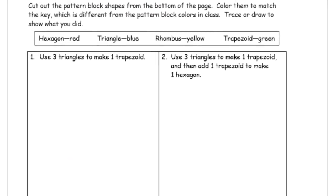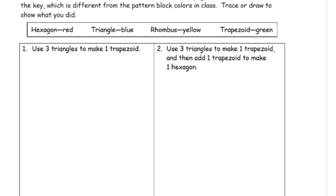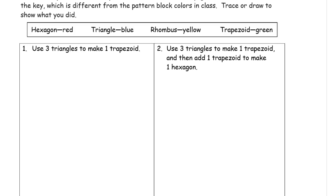It says to trace or draw to show what you did. Here it says use three triangles to make one trapezoid. There are many ways to do this. I'm going to have to draw them, outline them first before I color them. I'm going to draw them in black first and then color them. Remember the triangles are blue.